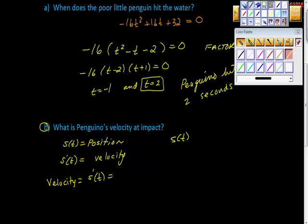So velocity equals S prime at T, and S prime at T, if S of T is equal to negative 16T squared plus 16T plus 32, then the derivative of that is equal to negative 32T plus 16.